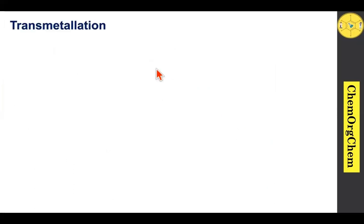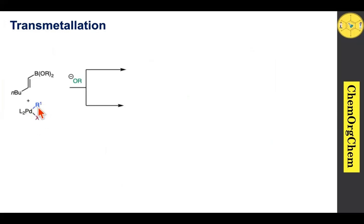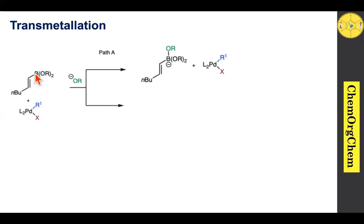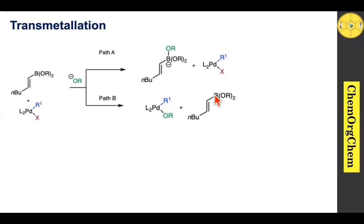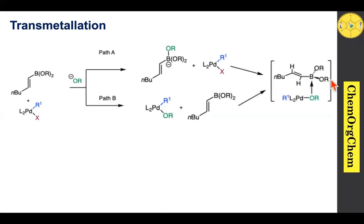Transmetalation is the important step in this catalytic cycle. The oxidative addition species reacts with a boronic ester in the presence of base. This reaction can proceed via two pathways. In path A, the base attacks the boron atom to produce the corresponding borate intermediate along with the palladium species. Alternatively, the base directly interacts with the palladium species, undergoing metathesis to produce the corresponding palladium-hydroxide species along with the boronic ester.